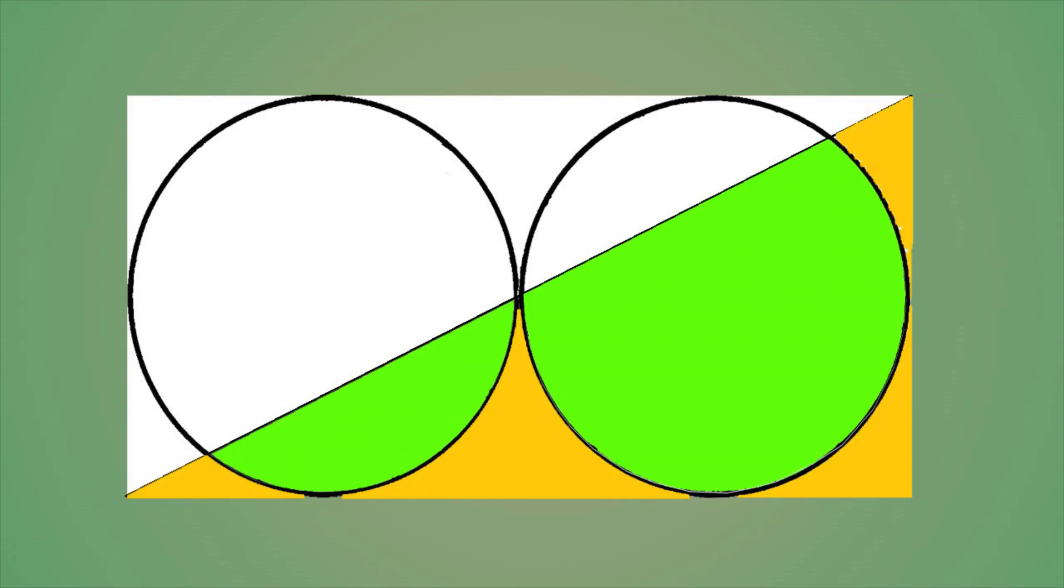We can simply do it by subtraction. If we subtract the green colored areas from this triangle, the remaining area is the total area of the yellow region.